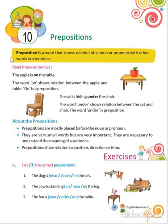Let's read this sentence: 'The apple is on the table.' Here, 'on' is the preposition because it shows the relation between the apple and the table.